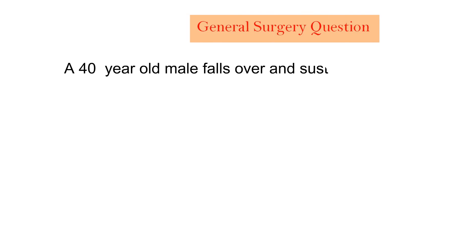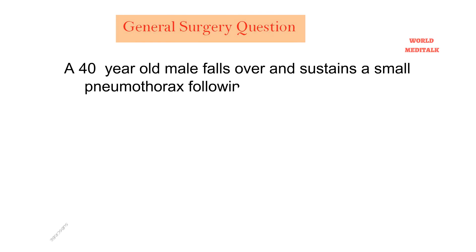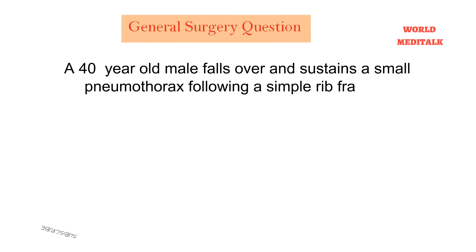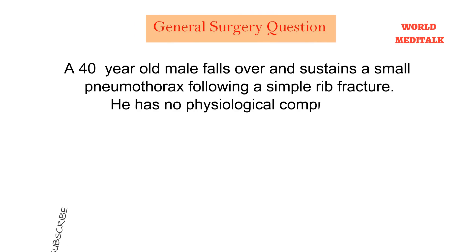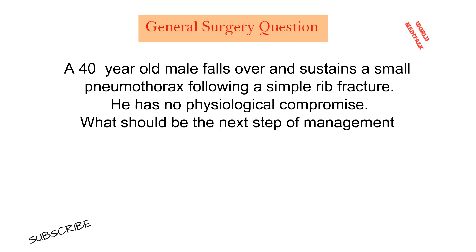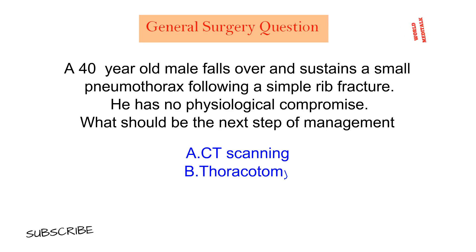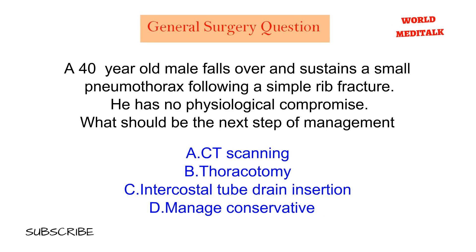A 40-year-old male falls over and sustains a small pneumothorax following a simple rib fracture. He has no physiological compromise. What should be the next step of management? CT scan, thoracotomy, intercostal tube drain insertion, or manage conservatively?